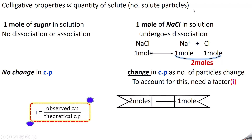But when you take one mole of sodium chloride and put it in solvent, the sodium chloride dissolves and undergoes dissociation to form one mole of Na⁺ ion and one mole of Cl⁻ ion. So when you see the number of particles in solution, it is found to be two moles. But what we have added is one mole. There is an increase in the number of particles, and since there is an increase in the number of moles of solute particles, there is a change in colligative property.